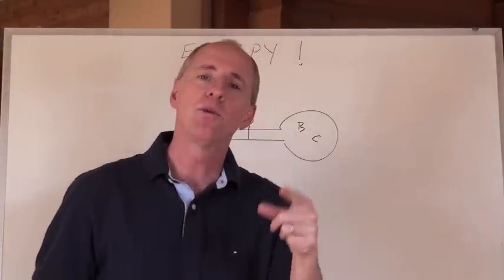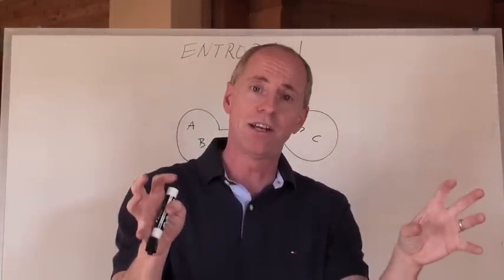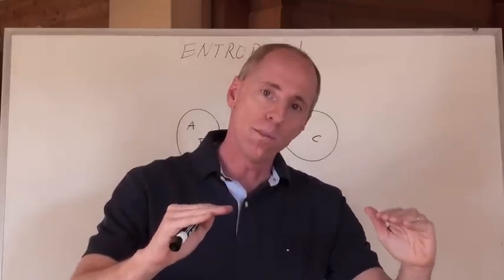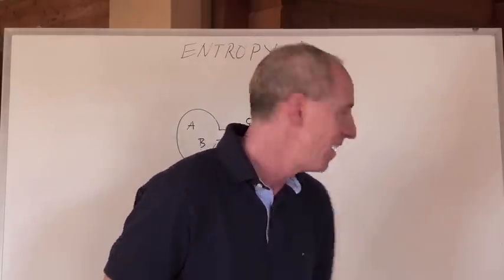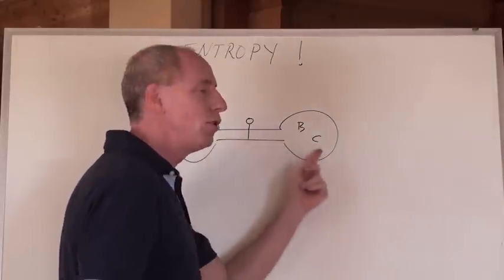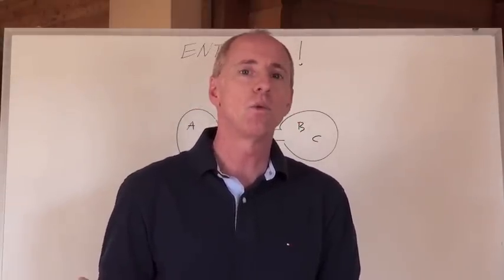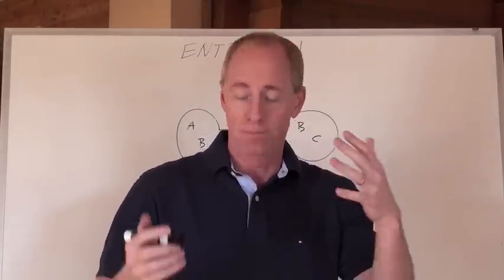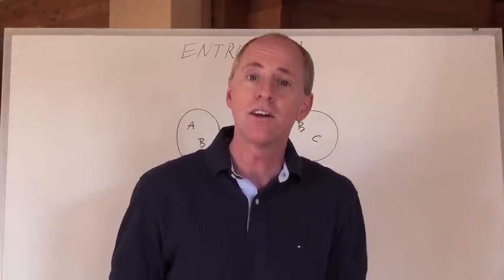And because that one has the most probability of existing, the six microstates here, instead of the four microstates, or the one microstate, that means that nature chooses this to be the equilibrium position. And that's because it's the one that has the most microstates, the most randomized state that there is.